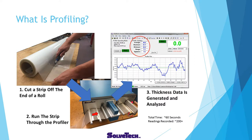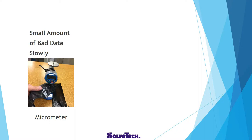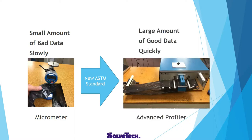What is profiling? Profiling is how we use non-contact gauging technology in a practical way to look at the thickness and variability of our film across the roll, around the bubble in blown film, or across the extruder in cast film. This gives us a picture of what the extrusion looks like and provides a lot more context than just measuring a single point. It does this very quickly and creates a lot of data points. We're moving from a small amount of bad data slowly with the old standard and a micrometer to a large amount of good data quickly using the Advanced Profiler.